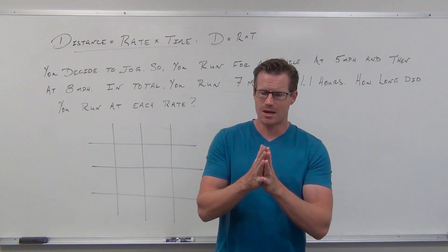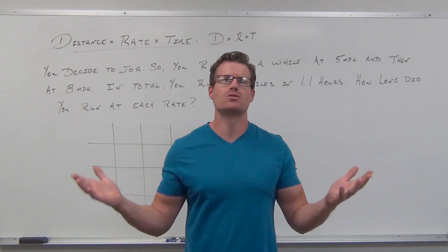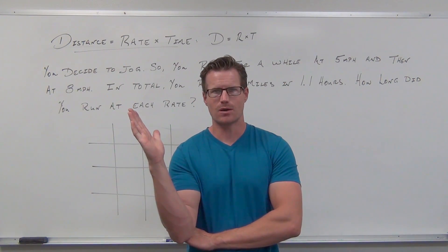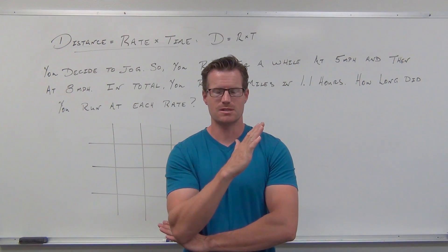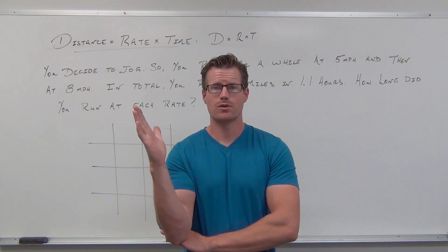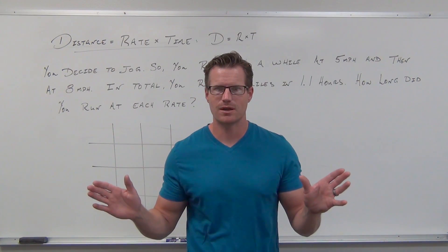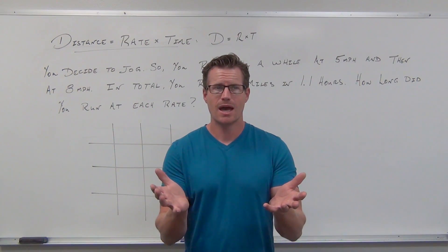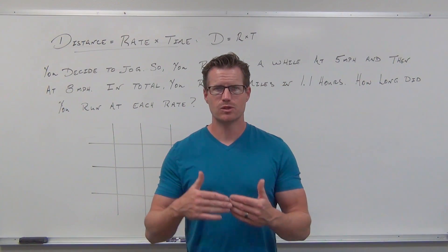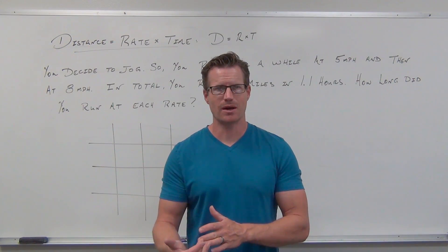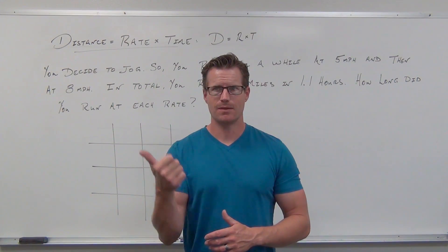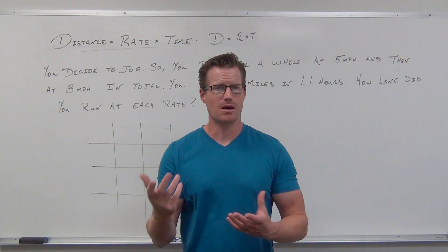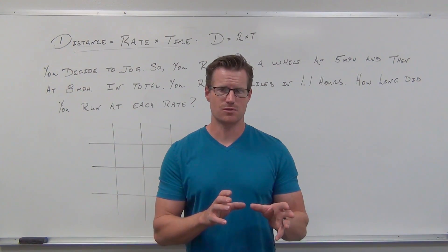In distance equals rate times time, the first thing we have to understand is the formula. Imagine you're driving down the road and your speedometer says 60 miles an hour, and you go for three hours with no traffic. 60 miles per hour means in every hour you've gone 60 miles — so 60, then another 60, then another 60, or three times 60. That's 180 miles. That's what distance equals rate times time does for you.